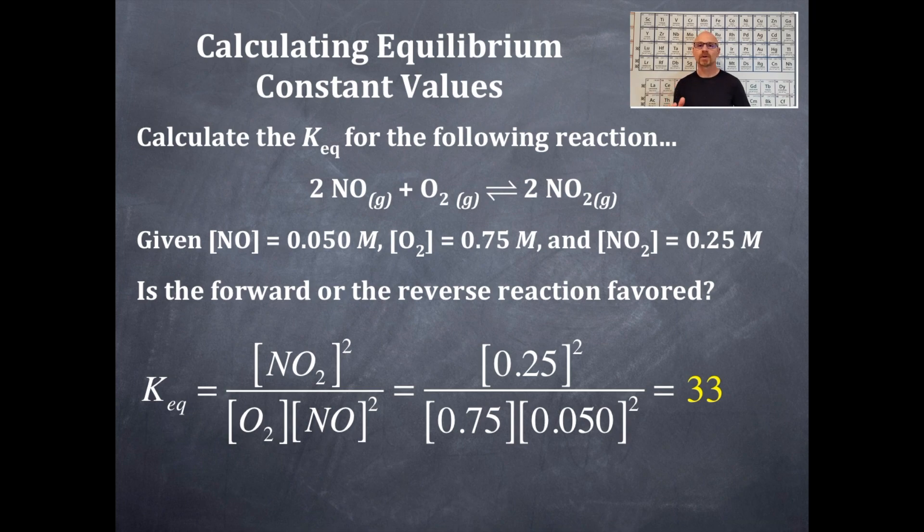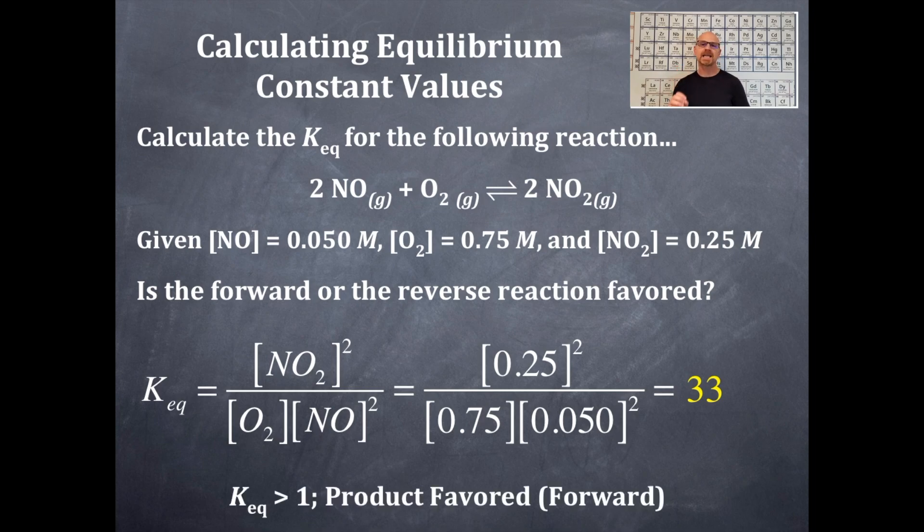So that number is greater than 1, therefore this is product favored. So KEQ is greater than 1, it is product favored or forward favored.